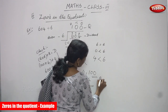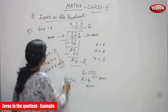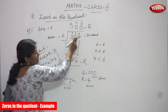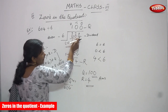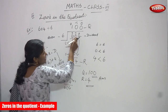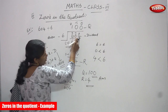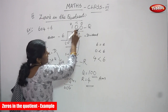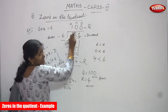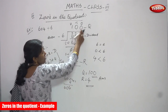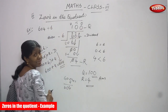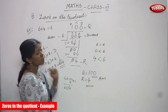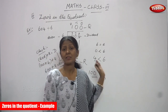You understand the topic — 0 in the quotient. 0 is in the middle position of the dividend, and in the quotient place 2 zeros are coming. So the title is exactly right: 0 in the quotient. The quotient is 100 and the remainder is 4. You understand very clearly — this is the example sum.